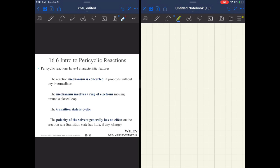Now, all three types have several common elements. They have a concerted mechanism. A little review of a vocab word there means all of the bonds that break and form during that reaction break and form at the same time, right? So, it's a one-step mechanism. That mechanism involves that ring of electrons I was talking about. Your transition state is cyclic. Those two kind of go together there. And the polarity of the solvent generally has no effect.